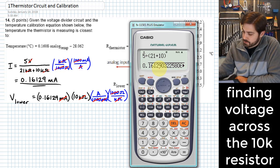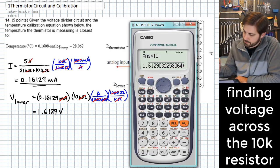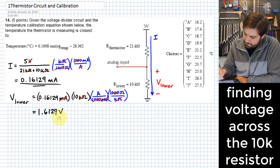It's just going to be that previous result times 10. So this gives me 1.6129. That's the voltage across the lower resistor.